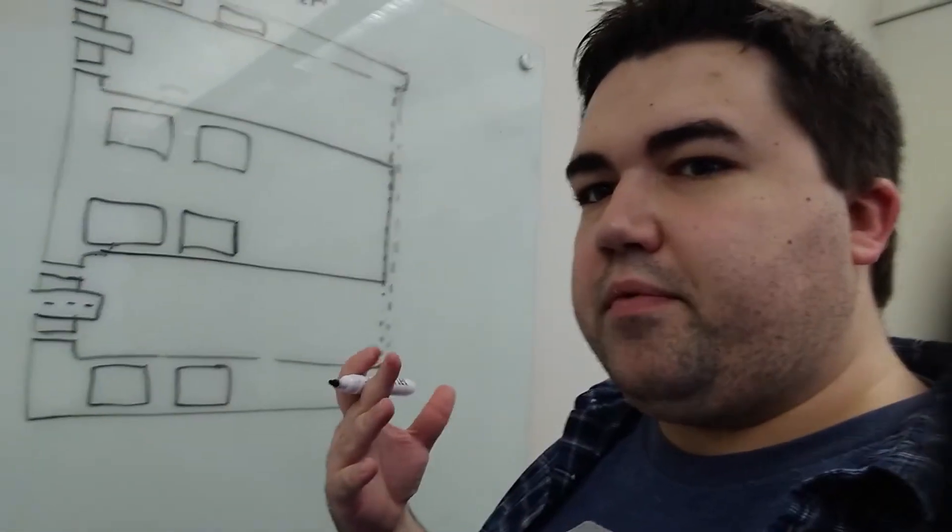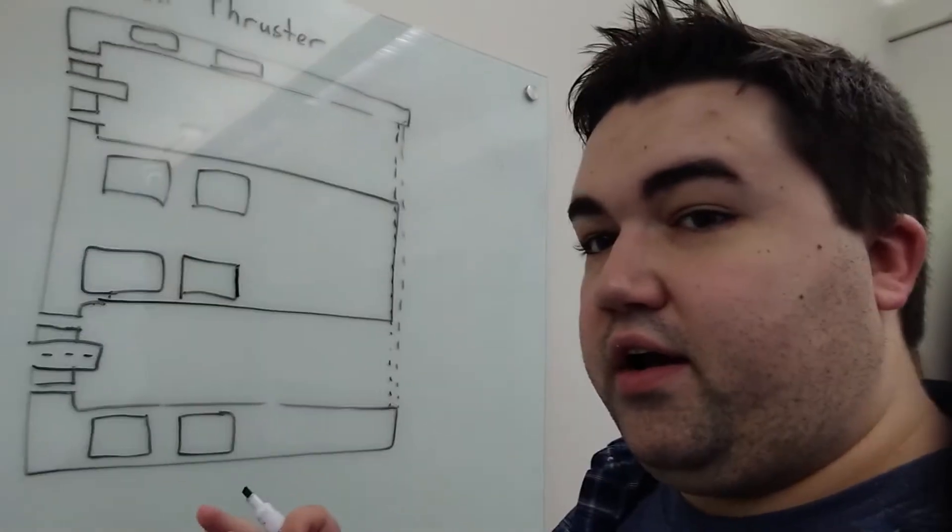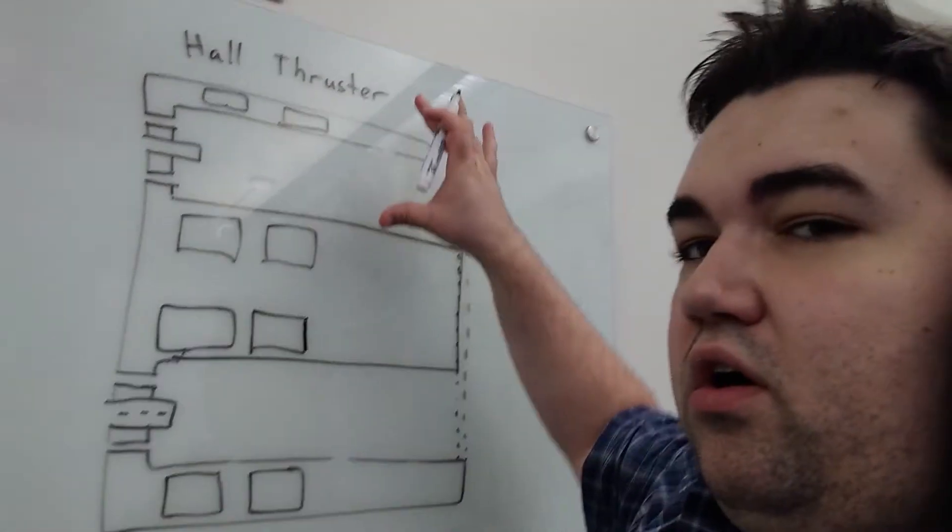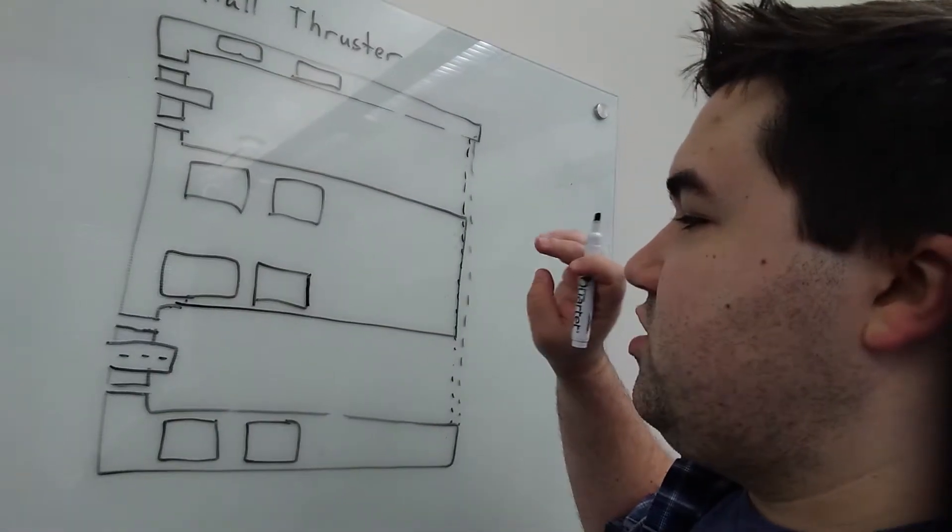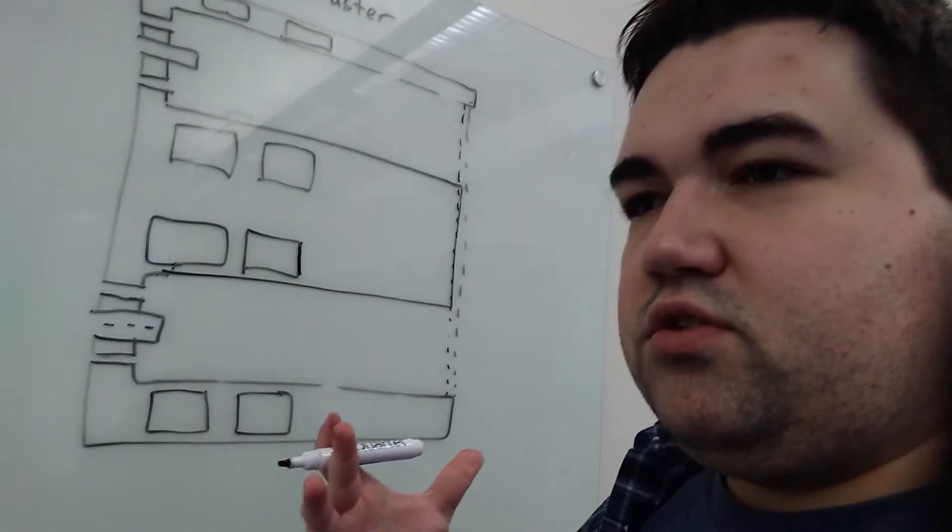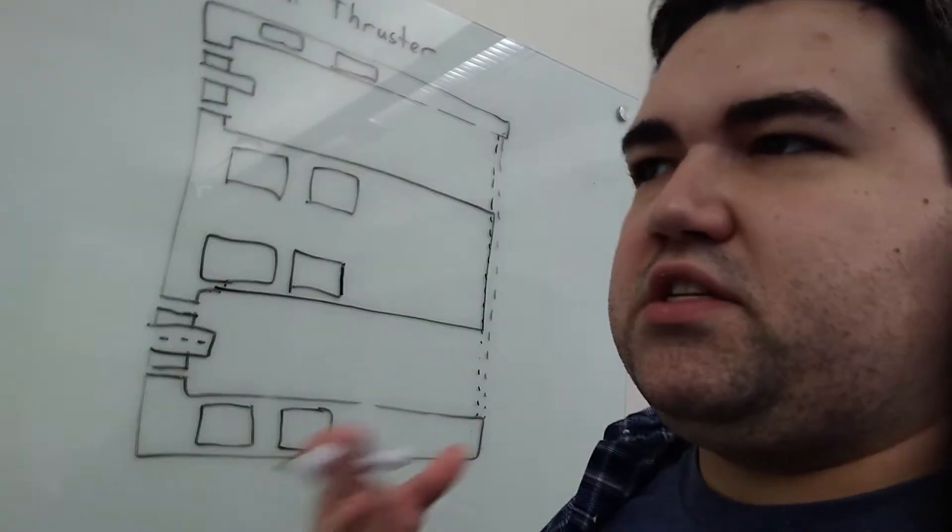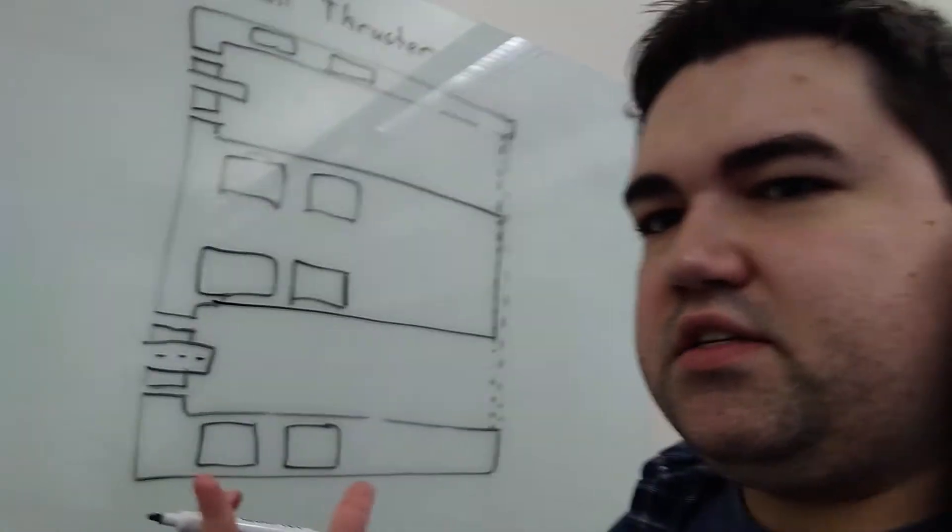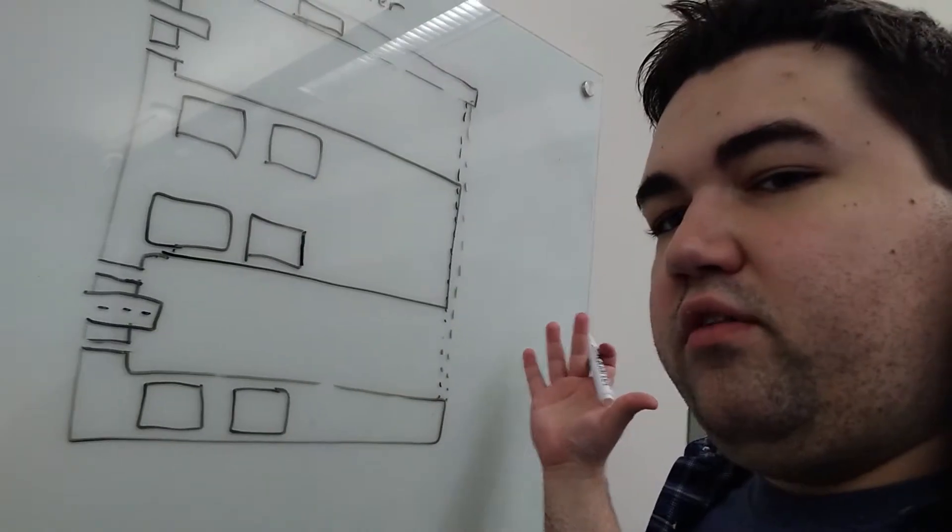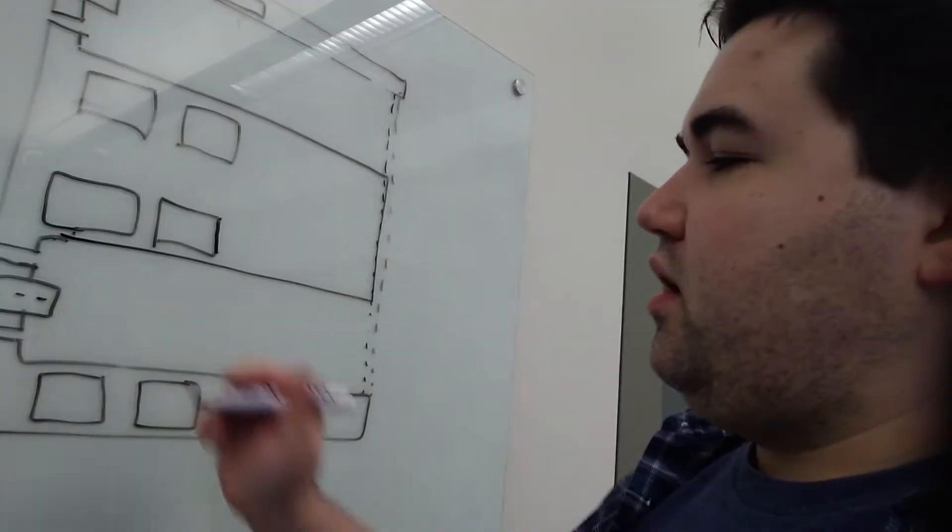Okay, so we learned what happens with a regular gridded ion thruster. What happens if we make it a little bit better? Well, in that case, you get what's called a Hall thruster, which actually uses the Hall effect to optimize the amount of xenon that's getting ionized so that it can be propelled out of the back of the thruster here.